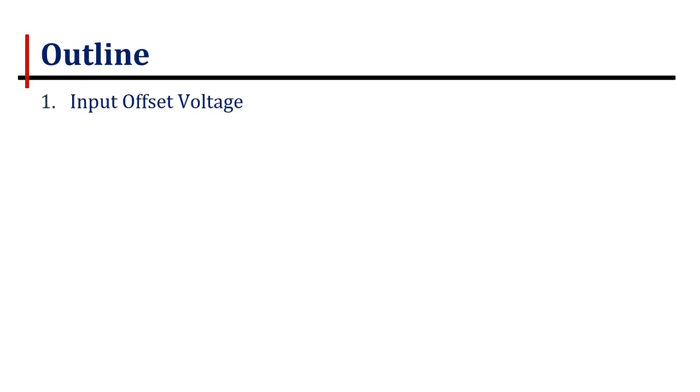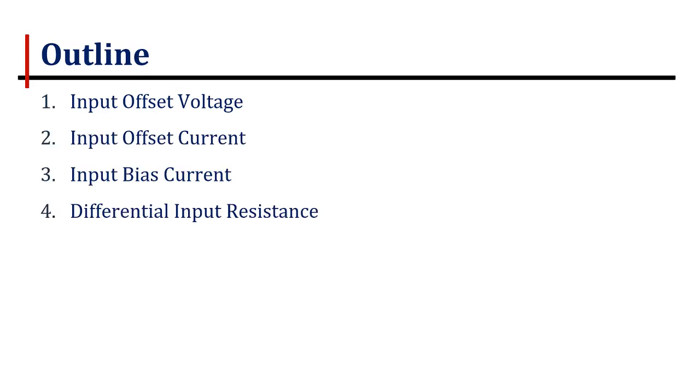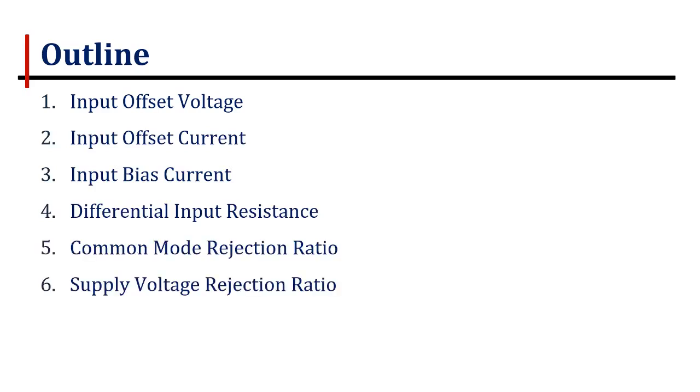These include input offset voltage, input offset current, input bias current, differential input resistance, common mode rejection ratio, supply voltage rejection ratio, slew rate, and the last one is gain bandwidth product.